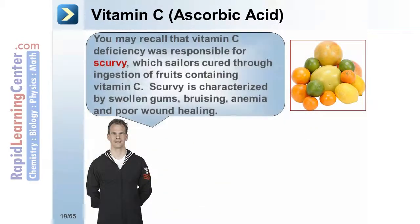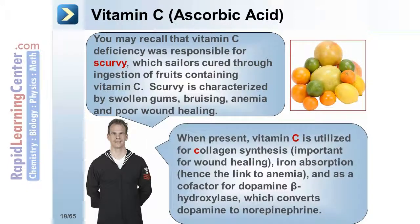Ascorbic acid is also known as vitamin C. Vitamin C deficiency was responsible for scurvy, which sailors cured through ingestion of fruits containing vitamin C. Scurvy is characterized by swollen gums, bruising, anemia, and poor wound healing. When present, vitamin C is utilized for collagen synthesis, important for wound healing, iron absorption — hence the link to anemia — and as a cofactor for dopamine beta-hydroxylase, which converts dopamine to norepinephrine.